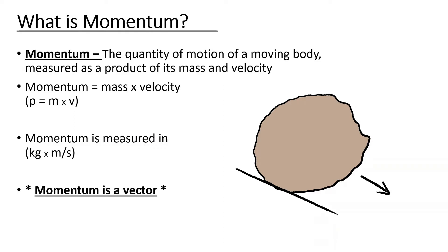So what is momentum? Momentum is the quantity of motion of a moving object measured as a product of its mass and velocity. Momentum is symbolized as P, which equals mass times velocity, and is measured in kilograms times meters per second.